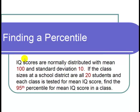This is a video on finding a percentile. The question states, IQ scores are normally distributed with mean 100 and standard deviation 10. If the class sizes at a school district are all 20 students and each class is tested for mean IQ score, find the 95th percentile for mean IQ scores in a class.